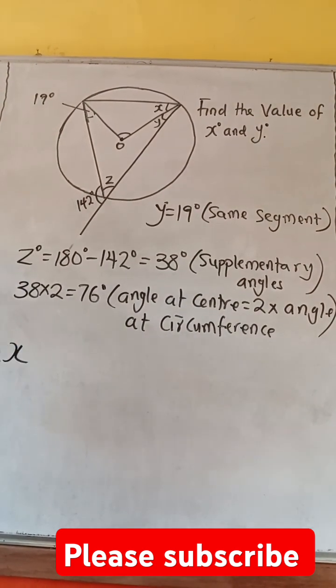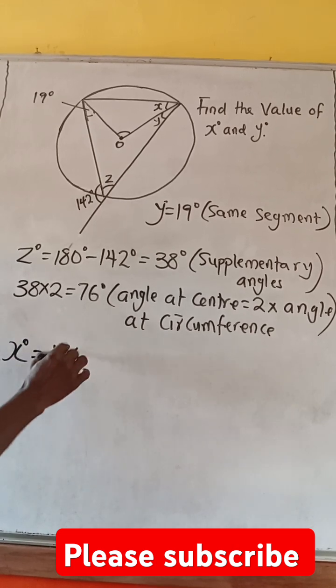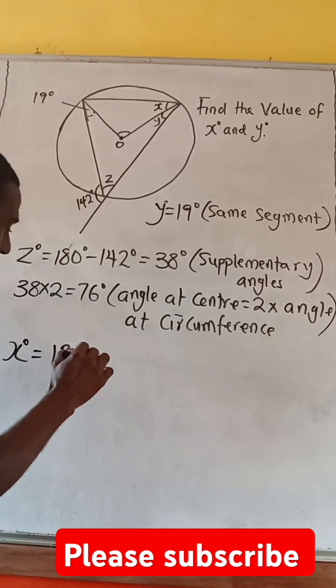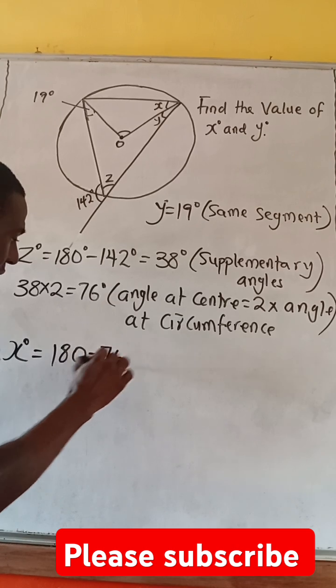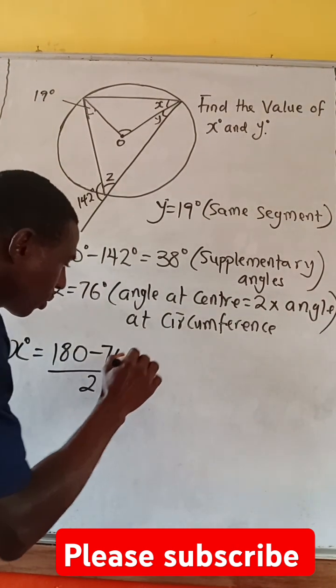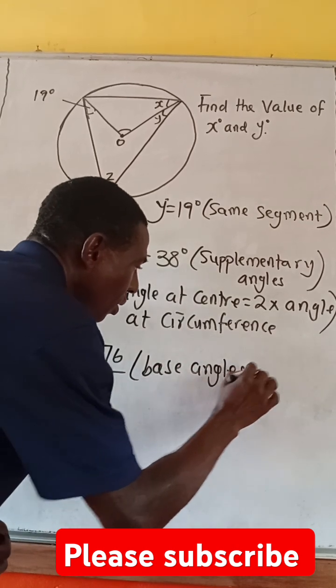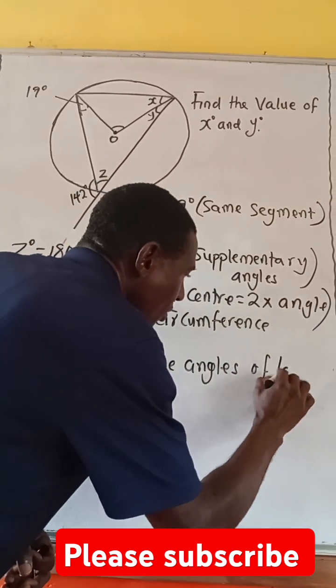Therefore, we can easily look for the value of our x. We can say x equals 180 minus 76 divided by 2 because these are the two base angles. So, base angles of isosceles.